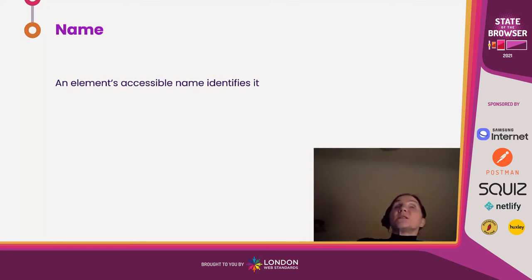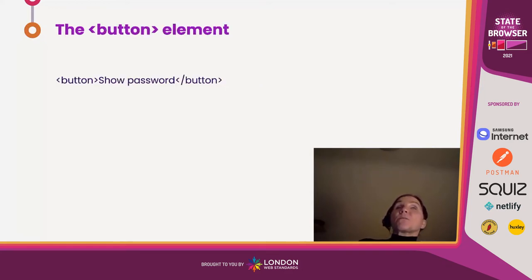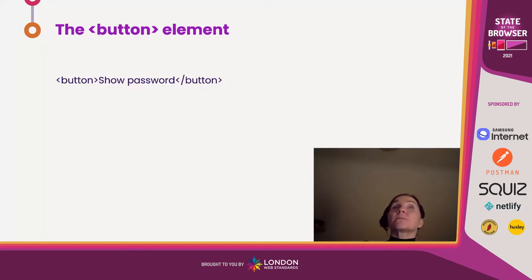The next bit of useful accessibility semantics is the name, or accessible name. This is what differentiates one type of element on a page from another — much like our names do. If we extend our example by putting some text inside the button element, that's how a button element gets its accessible name: from what goes inside the two ends of the tag. There are now two bits of information available to me as a screen reader user — the implicit role of the element and its accessible name. 'Show password, button.' Now I know what this thing is and I know what it's for.